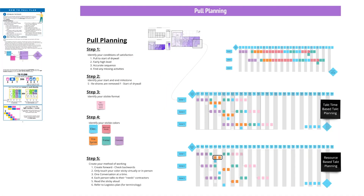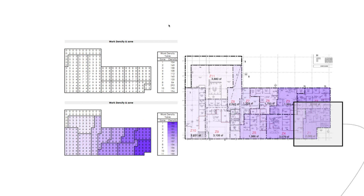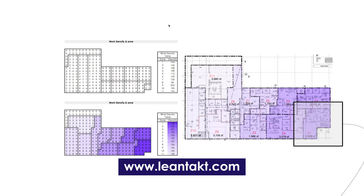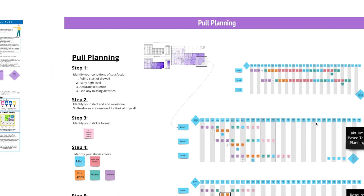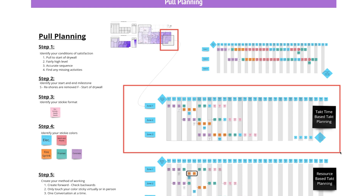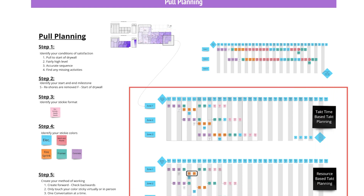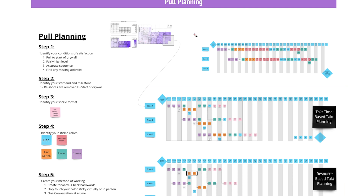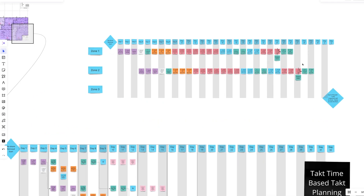Step two: identify your start and finish milestone. Here we said reshore removal as the start and start of drywall as the finish. Step three: establish the sticky format. On Miro, we used duration, activity, and needs. We also identified sticky colors for each trade. Then define your method of doing work, and you're ready to start the pull plan.